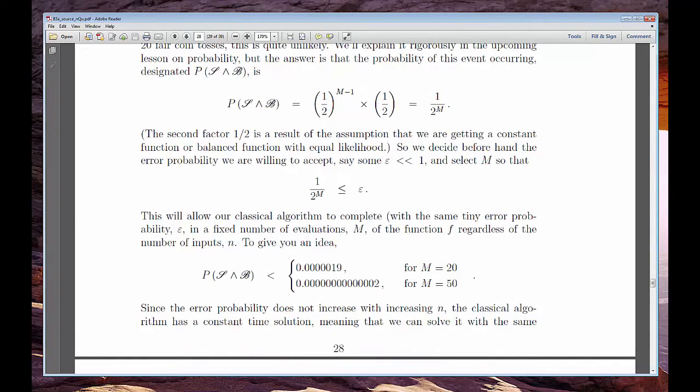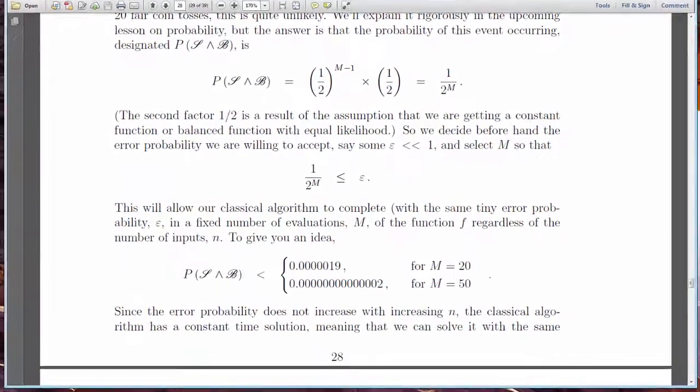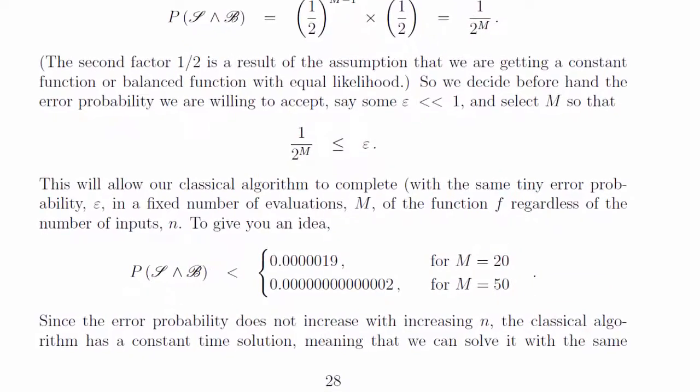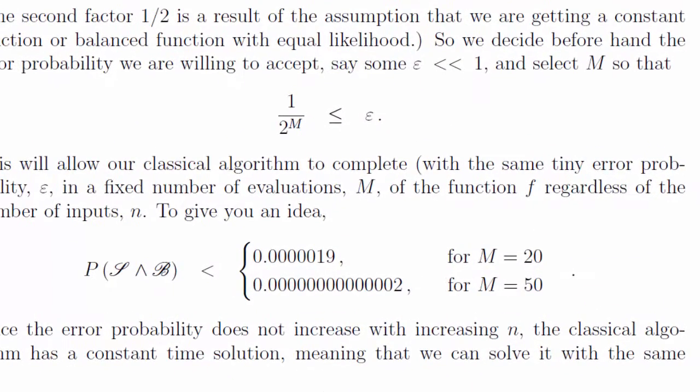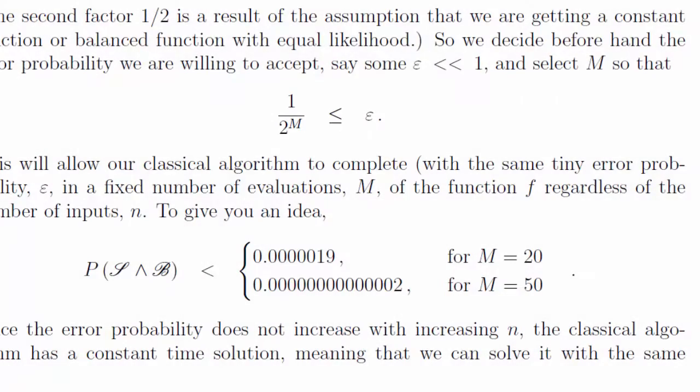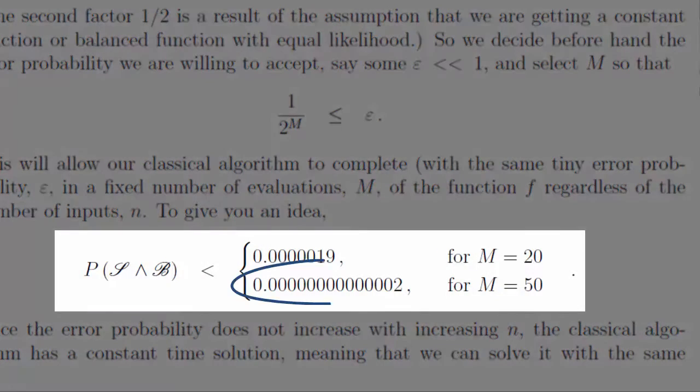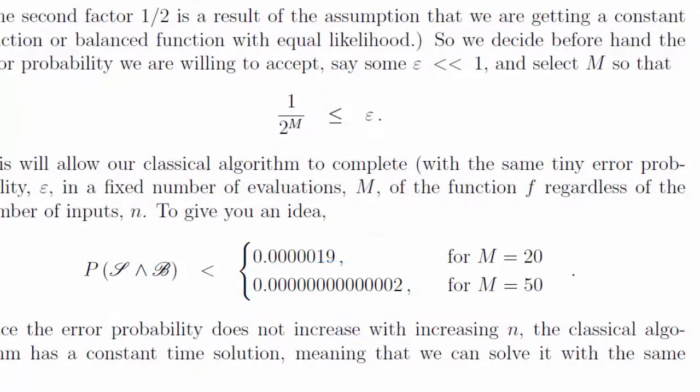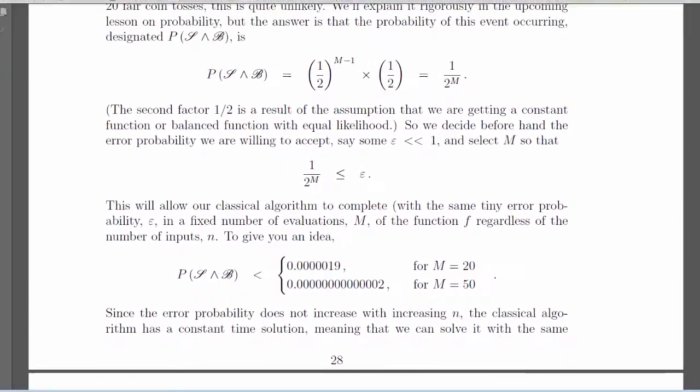There's a minor problem with the analysis, though. It's not quite fair. If we allow a minuscule probability of error, that is, we consider a classical solution which is probabilistic rather than deterministic, we can find a constant classical solution. So, the quantum algorithm doesn't seem that compelling after all.